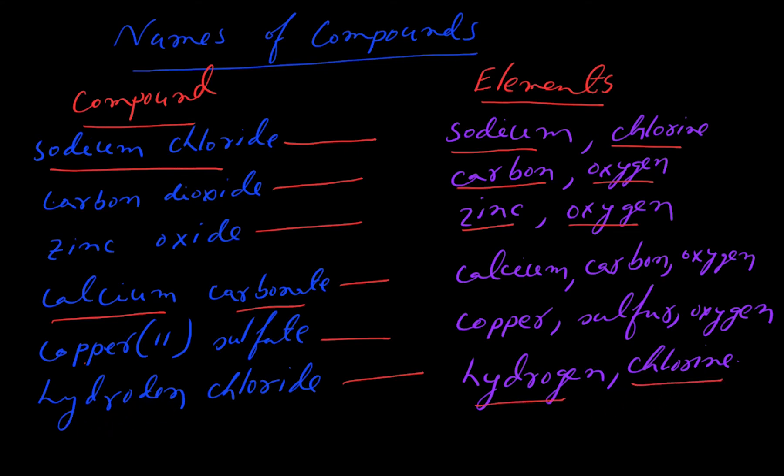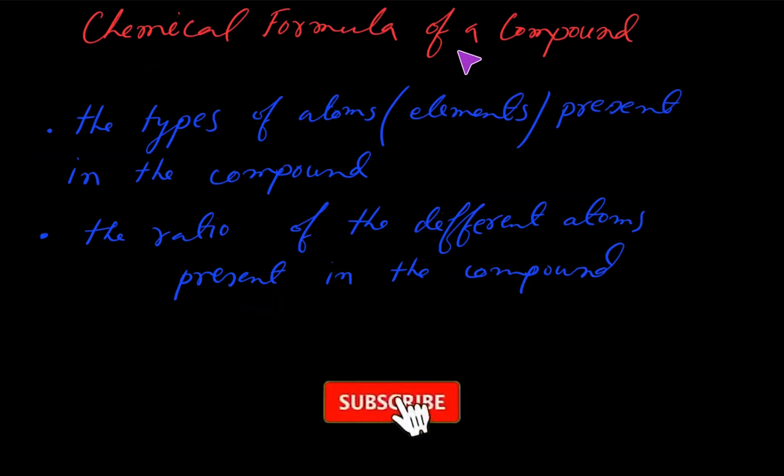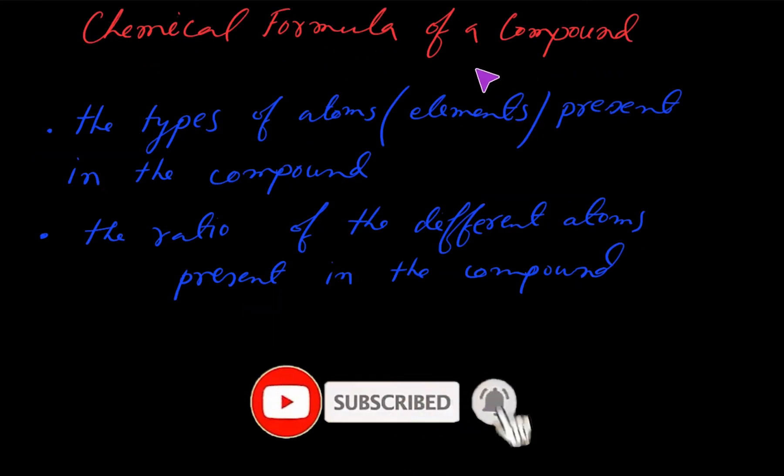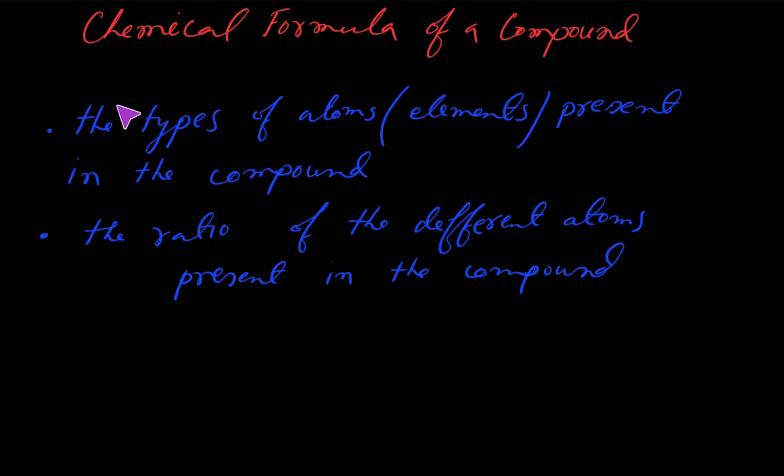Chemical formula of a compound: A compound can be represented by a chemical formula. The chemical formula of a compound is written by putting together the chemical symbols of the elements that make up the compound. The chemical formula tells us the types of atoms or elements present in the compound and the ratio of the different atoms present in the compound.